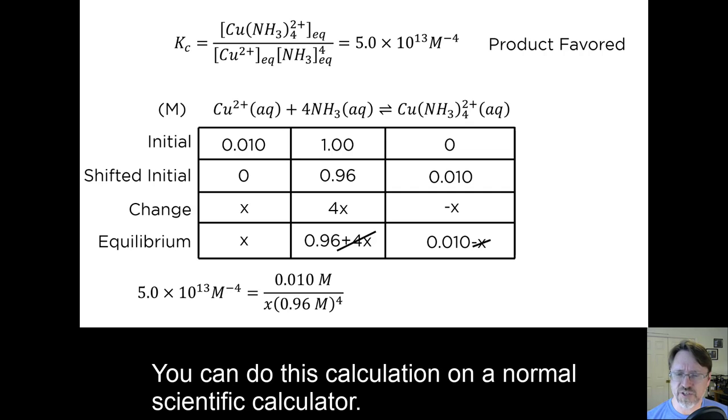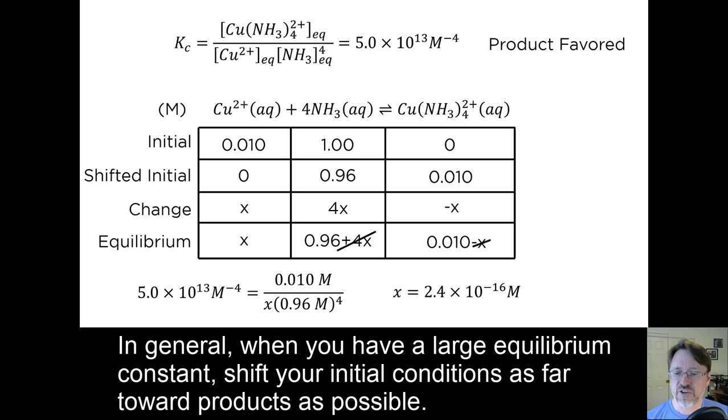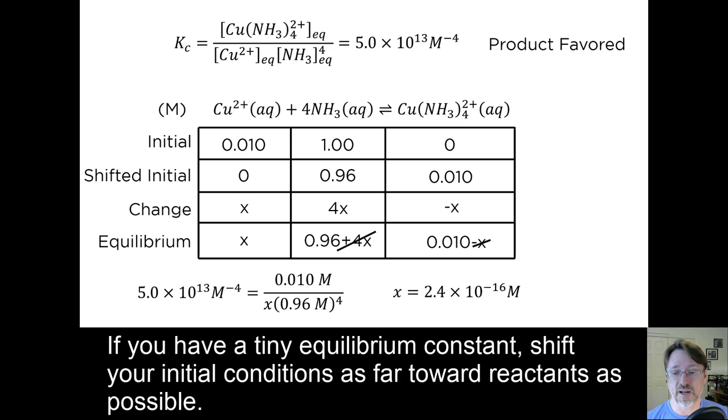You can do this calculation on a normal scientific calculator. And when we get the answer, we see that our assumptions that we could neglect 4x and x are easily validated. In general, when you have a large equilibrium constant, shift your equilibrium conditions as far towards the products as possible. If you have a tiny equilibrium constant, shift your initial conditions as far towards reactants as possible.